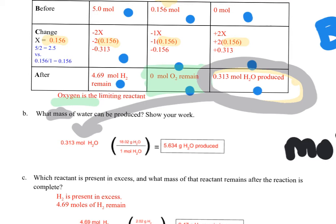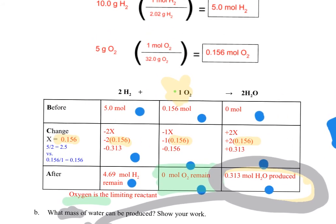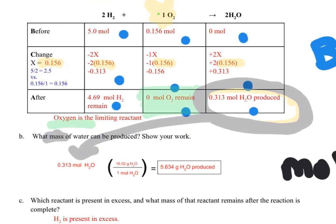That tells me we should, in theory, theoretically, produce 5.634 grams of H2O if I mix 10 grams of hydrogen and 5 grams of oxygen. In theory, I should make this much.